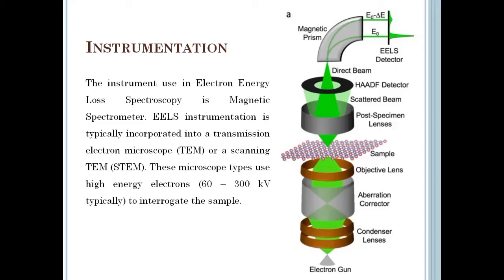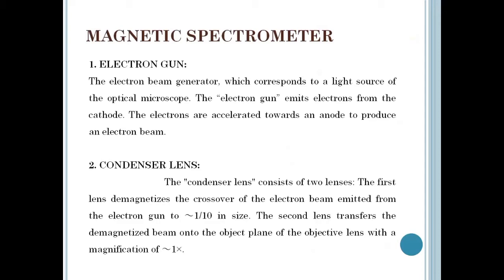The magnetic spectrometer discriminates energy-loss electrons on the basis of their absolute energy. The first part of the magnetic spectrometer is the electron gun — the electron beam generator, which corresponds to a light source in an optical microscope. The electron gun emits electrons from the cathode, which are then accelerated towards an anode to produce an electron beam.